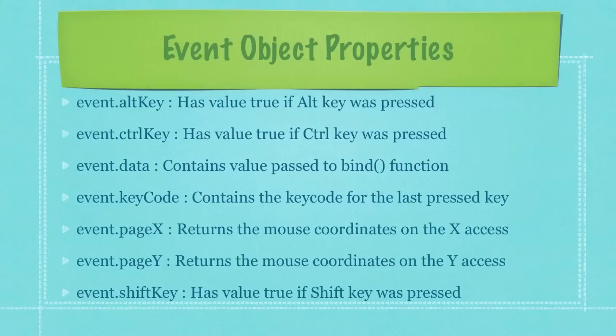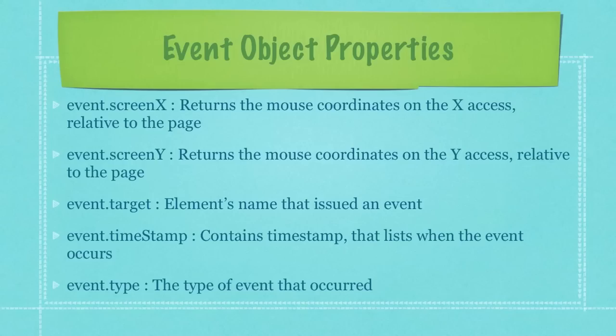event.keyCode contains a key code for the last pressed key. event.pageX returns the mouse coordinates on the x-axis. pageY returns the mouse coordinates on the y-axis. event.shiftKey has value true if the shift key is pressed. screenX returns the mouse coordinates on the x-axis relative to the page.